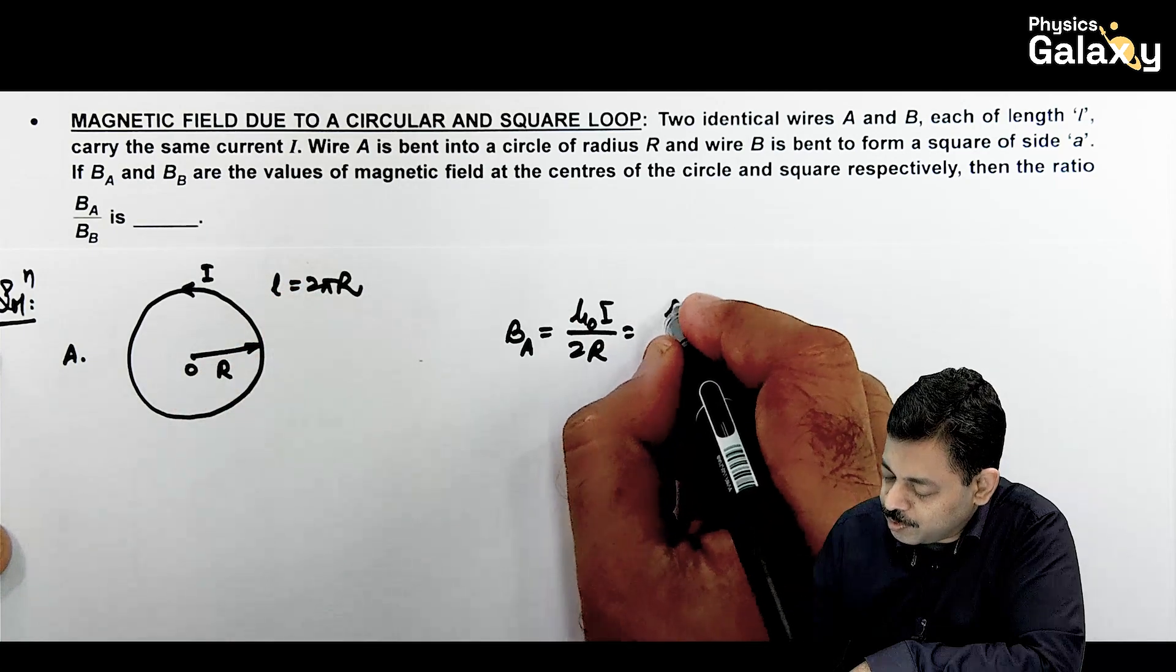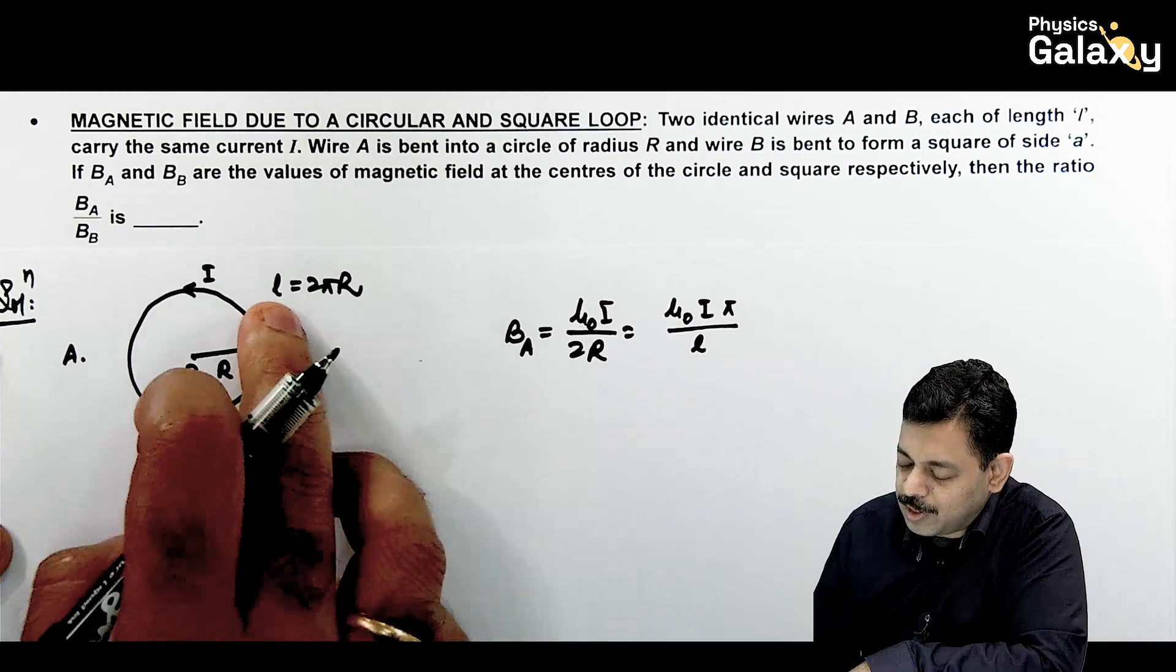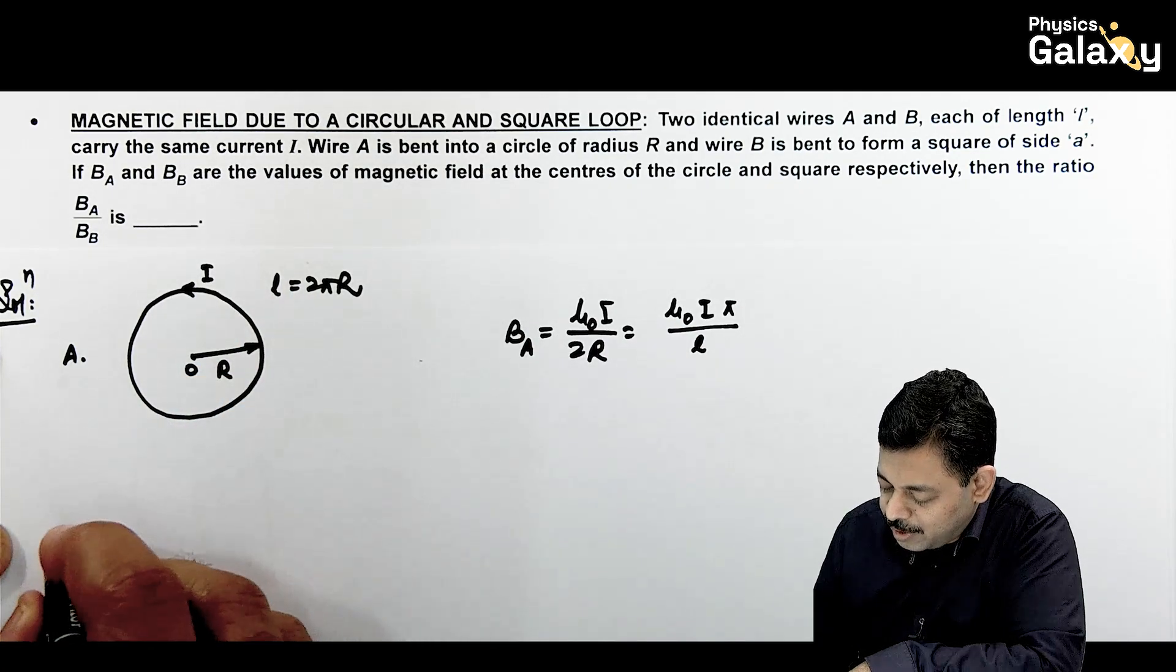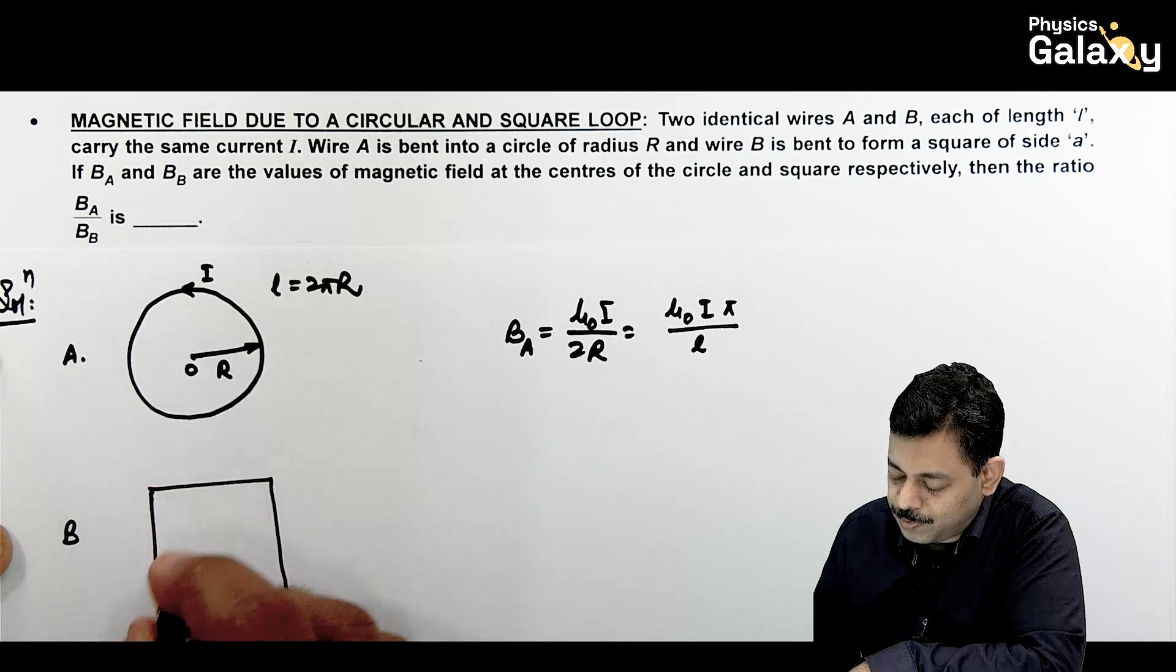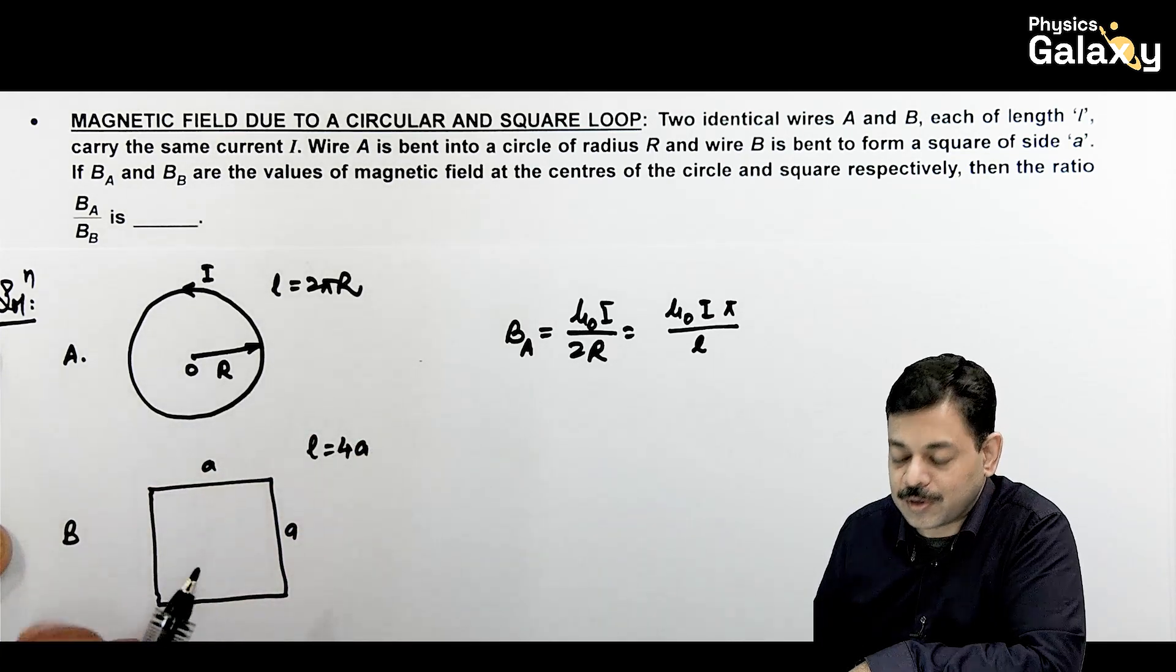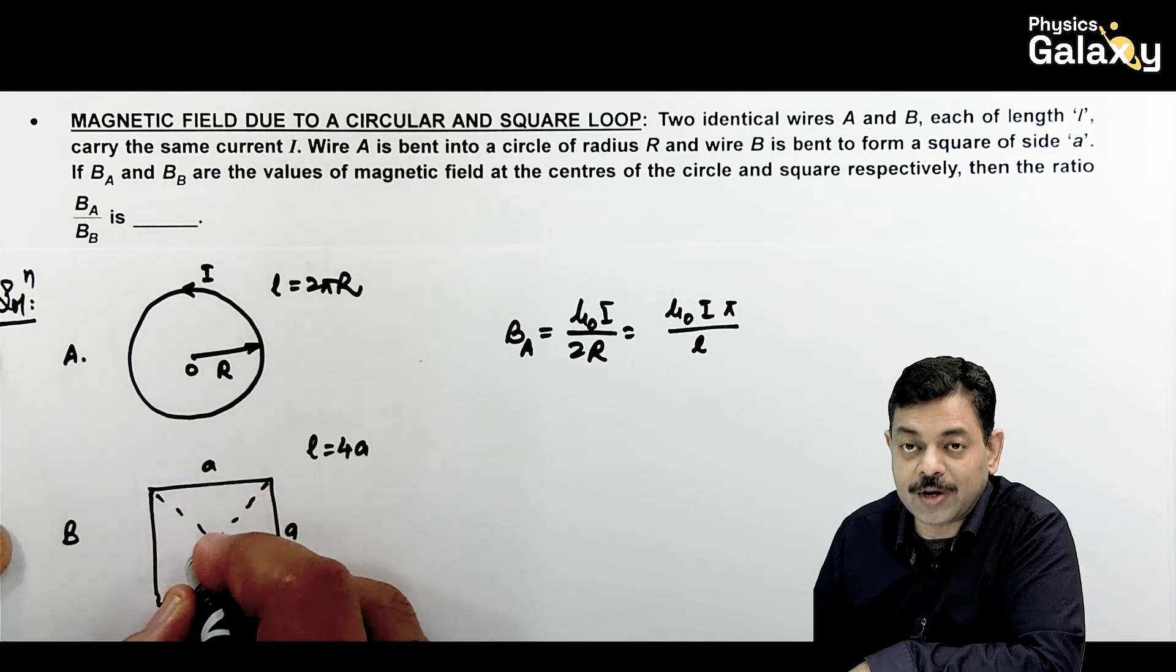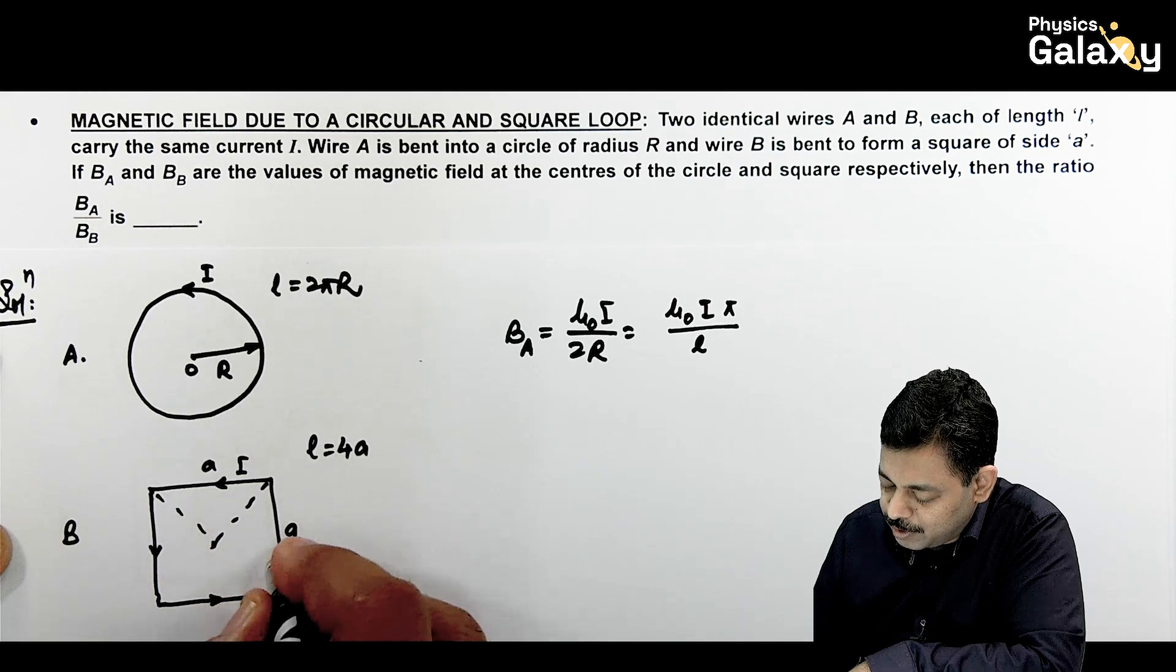Second case: B is a square loop like this with edge length a. The length will be 4a because length of wire is same. We need to calculate field at center. We can find field due to one side and make it 4 times. If this is current i flowing, if this is the current flowing, then one side produces field that we multiply by 4. Here it is a by 2, these angles are 45 degree and 45 degree.